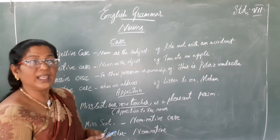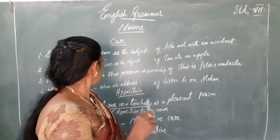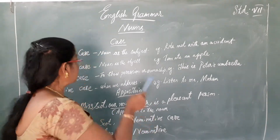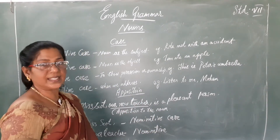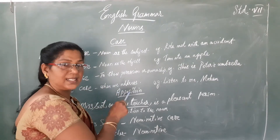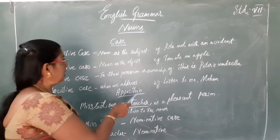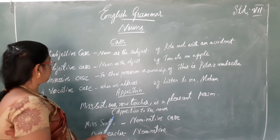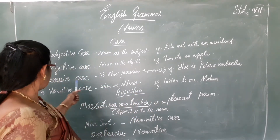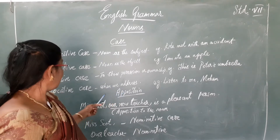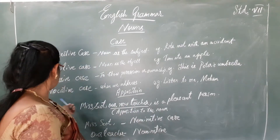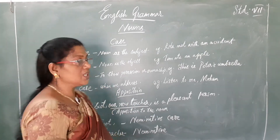When a noun is said to be the subject, it is considered to be in the subjective case. If the noun is considered as object, it can be in the objective case. If the noun shows possession, the noun can be in the possessive case. And when the noun is in the form of an addressing, it is the vocative case.